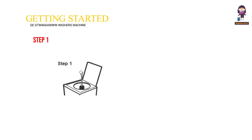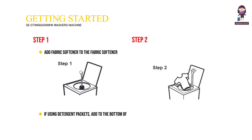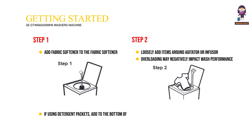Getting started. Step 1: Add Fabric Softener to the Fabric Softener dispenser. If using detergent packets, add to the bottom of the wash basket before adding clothes. Step 2: Loosely add items around the agitator or infuser. Overloading may negatively impact wash performance.